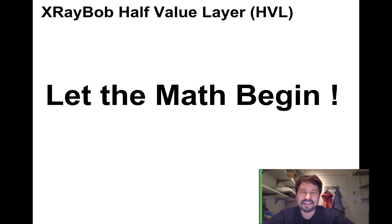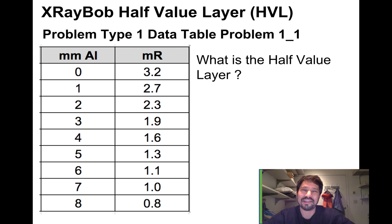So I know you're excited to get to the math. Let the math begin. Problem type one is they give you a data table, and they say, what's the HVL? Here we've got millimeters of aluminum, and here we have MR.